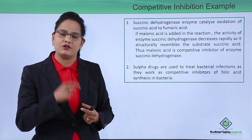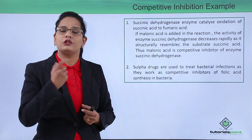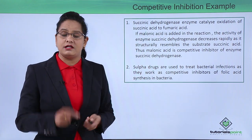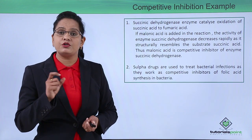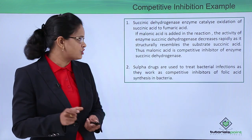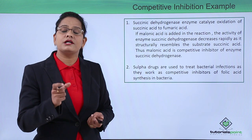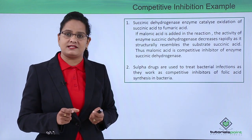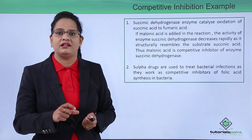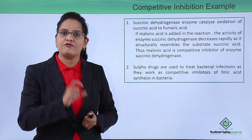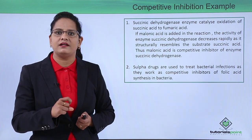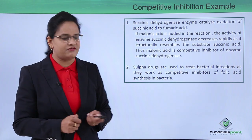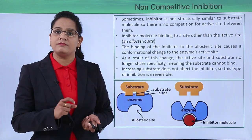As a result, the formation of fumaric acid is reduced. Another example is sulfa drugs, which are used to treat bacterial infections. They act as competitive inhibitors of folic acid synthesis inside bacteria, stopping the process of folic acid synthesis so that the bacterial enzyme is affected and its activity is inhibited.